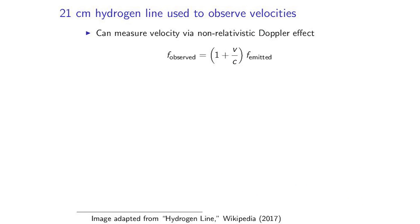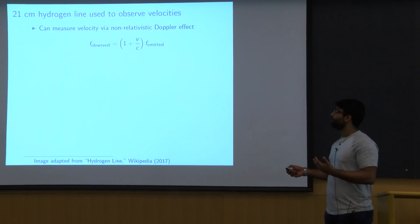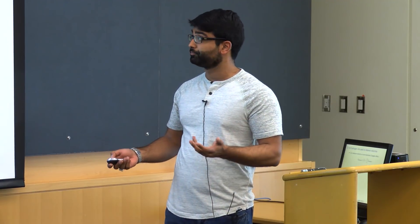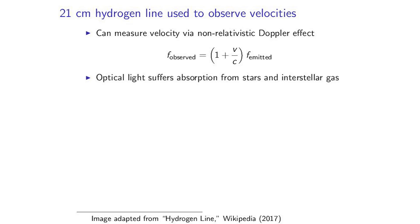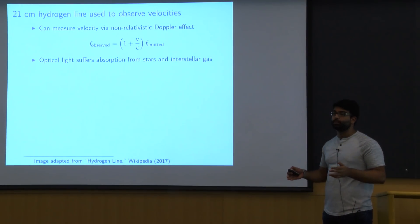So how are we going to find this rotation curve? The way we're going to be looking at the velocities of various stars is using the Doppler effect. In our case, this will be a non-relativistic Doppler effect. This is simply just as an object is moving towards you, the frequencies that it emits are slightly higher than if it were standing still. So we can look out at the stars, but looking for optical light doesn't work too well because it suffers absorption from other stars or interstellar gas and dust.